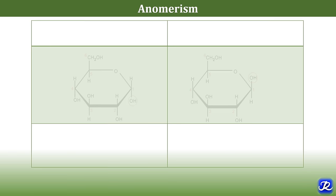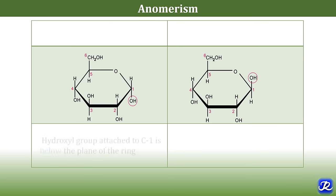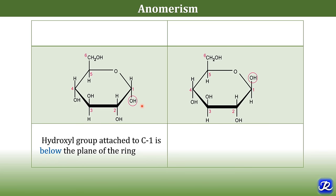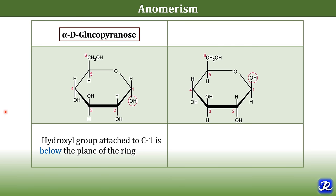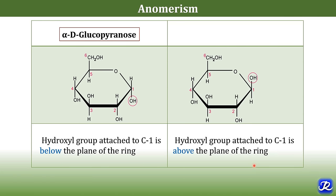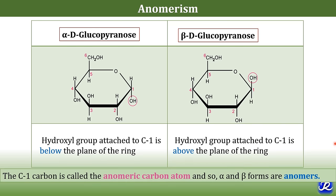Coming to anomerism — in this ring structure of glucose, the hydroxyl group attached to C1 is below the plane of the ring, and that is why it is called alpha-D-glucopyranose, which is the alpha anomer of glucose. Here the hydroxyl group attached to C1 is above the plane of the ring, and that is why it is beta-D-glucopyranose, the beta anomer of glucose. The C1 carbon is called the anomeric carbon atom, and alpha and beta forms are called anomers.